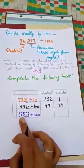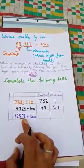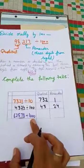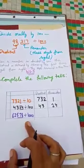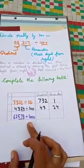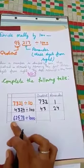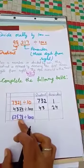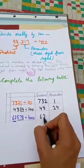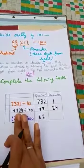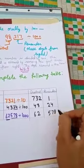Now come to the last part: 62,578 divided by 1000. When a number is divided by 1000, the quotient is obtained by removing the first three digits from the right and the digits removed are the remainder. When we divide 62,578 by 1000, we get 62 as quotient and 578 as the remainder.